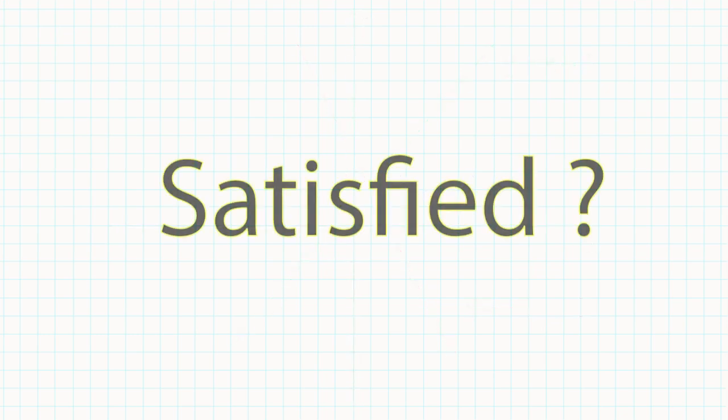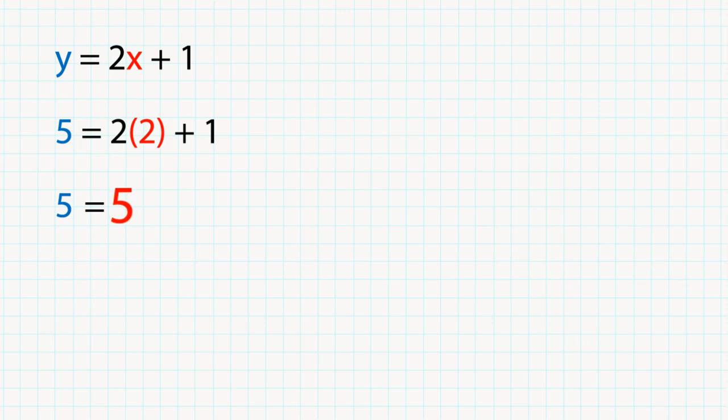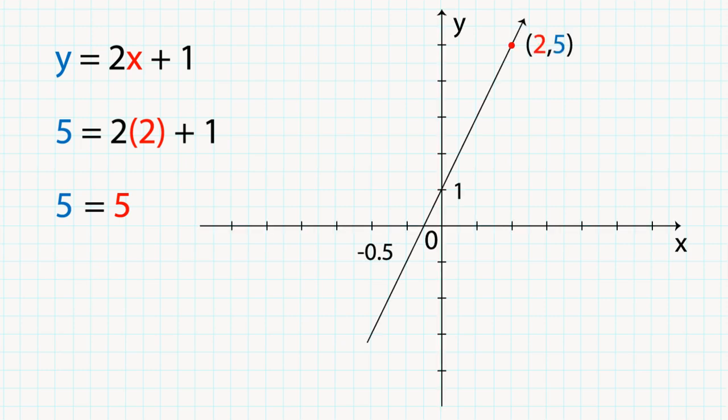Then what does it mean by satisfied? Here we have a linear function y is equal to 2x plus 1. If I substitute a point into the equation, so that means replace x by 2 and y by 5, you will get 5 is equal to 2 times 2 plus 1, we get 5 is equal to 5. When the left-hand side is equal to the right-hand side, that's when we can say the equation is satisfied and we know that the point 2 comma 5 is on the straight line of y is equal to 2x plus 1.